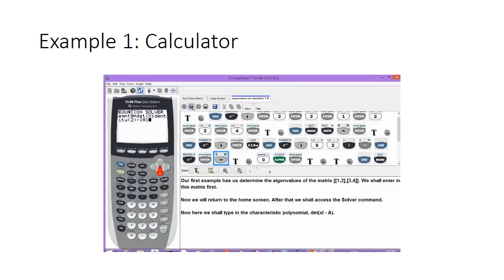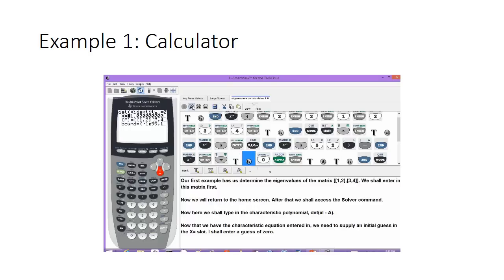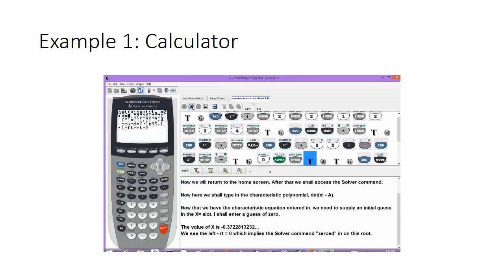I hit the down arrow to get to the next part of the solver. Now that the characteristic equation is entered in, we need to supply an initial guess in the x equals slot. I'll enter a guess of 0, then hit alpha and enter. The result is approximately negative 0.37228, and the left minus the right equals 0, confirming the solver zeroed in on this root.